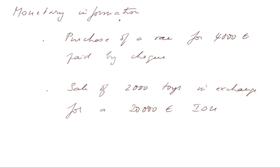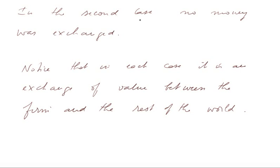Monetary information: for instance, the purchase of a van for 4,000 euros paid by cheque is a monetary piece of information. The sale of 2,000 toys in exchange for a 20,000 euros IOU from the client is also a piece of information of a monetary nature. Yet in the second case, no money was exchanged. Notice, however, that in each case, it is an exchange of value between the firm and the rest of the world.